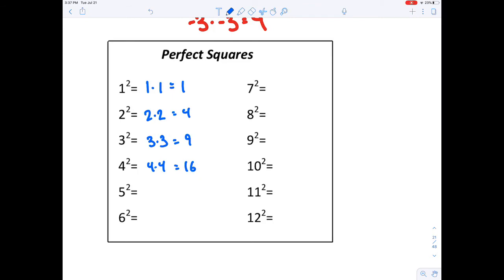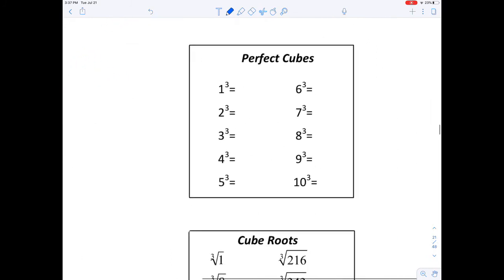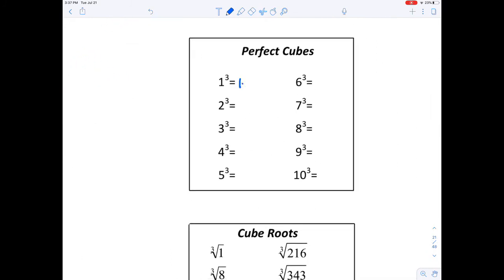So you, in essence, already know the first 12 perfect squares. Same deal with perfect cubes. The first one is 1 times 1 times 1, or 2 times 2 times 2, or 3 times 3 times 3, and so on.